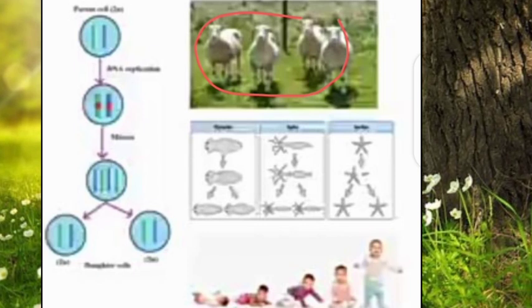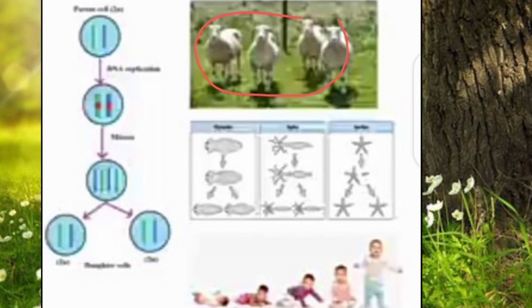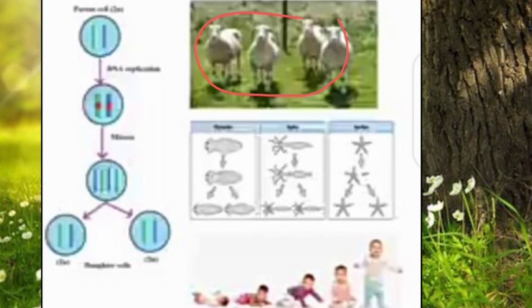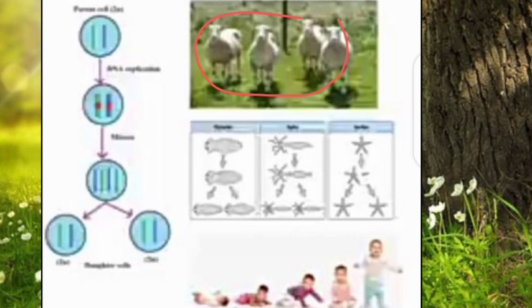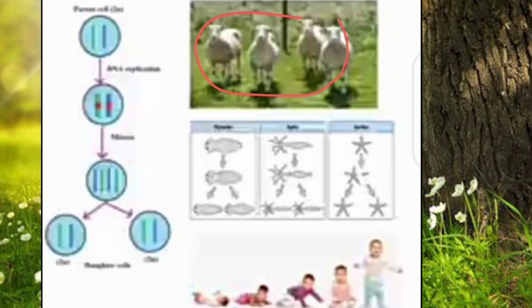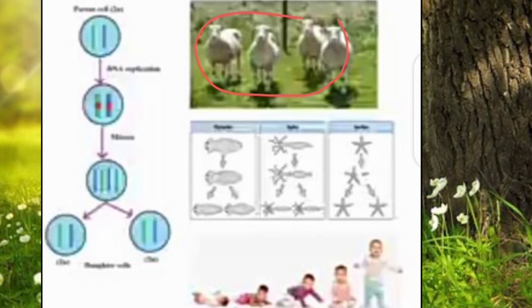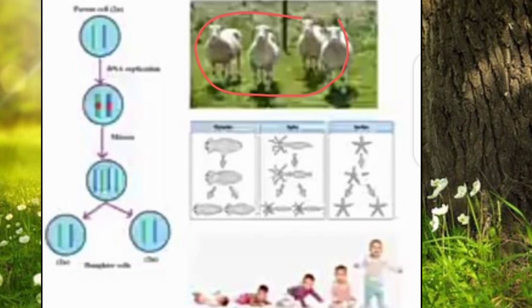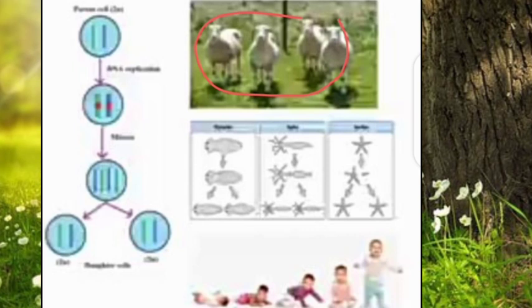These organisms can lose their parts and reproduce asexually by dividing into two parts, where each part regenerates by the help of mitosis. If mitosis were not present, asexual reproduction would not take place. Moreover, mitosis is also involved in regeneration and healing of wounds, and in the replacement of older cells.